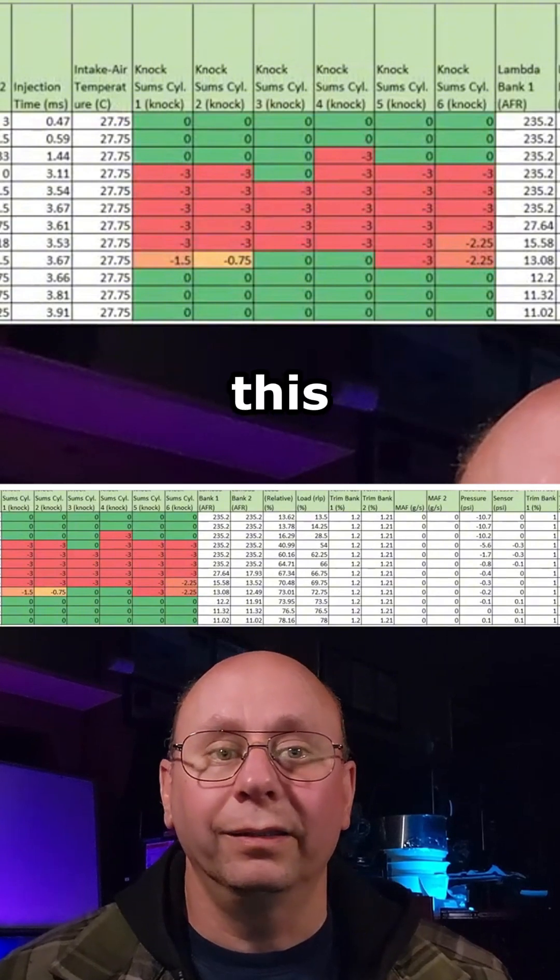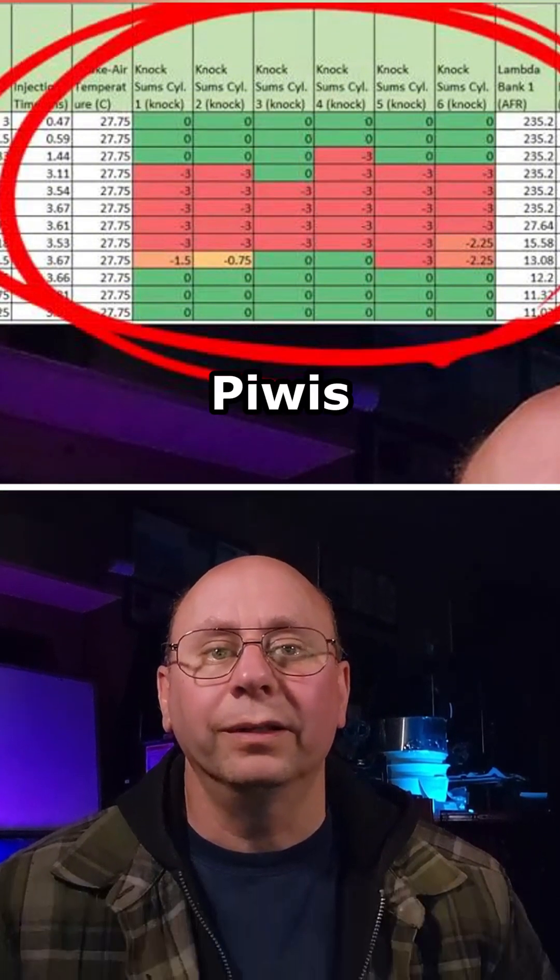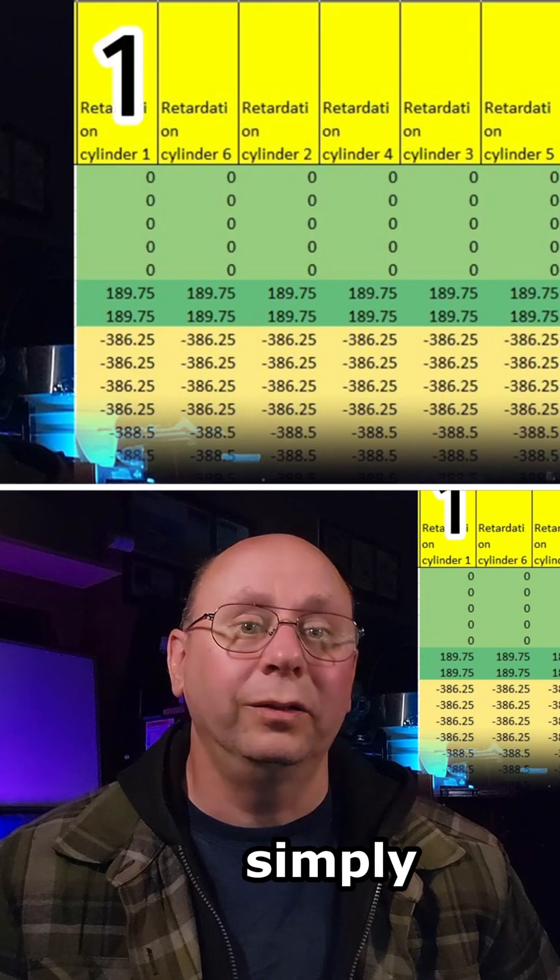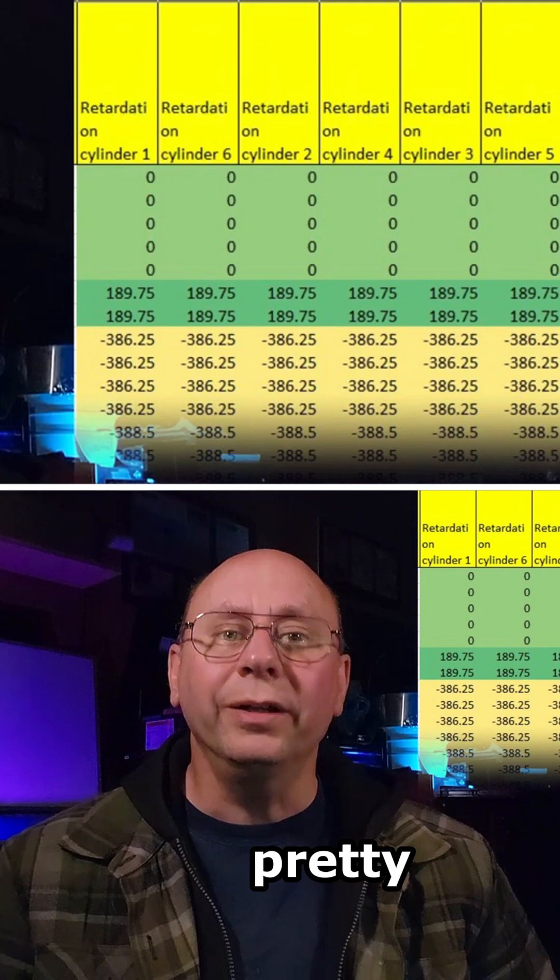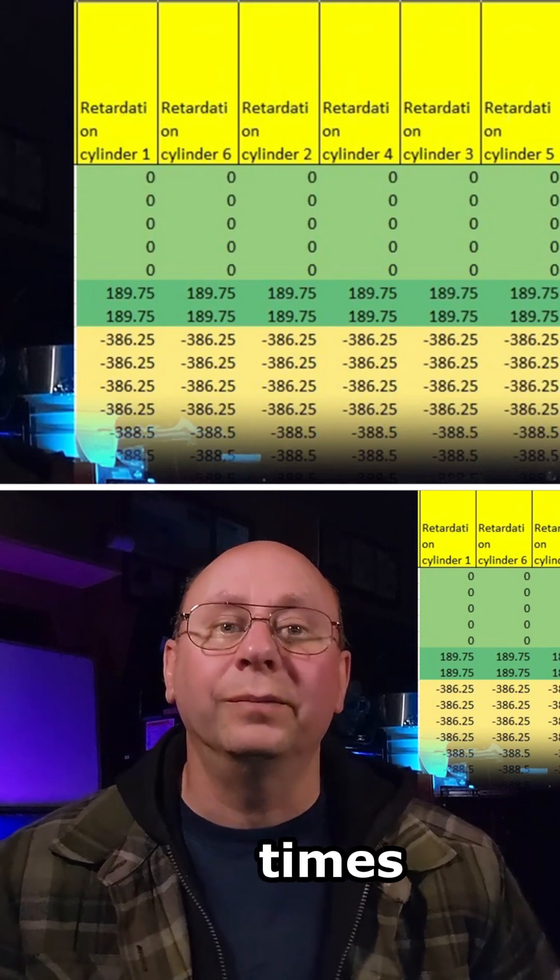The COB access port does this well, as does the factory PWIS. However, the Durametric seems to be simply duplicating Cylinder 1 6 times. Oops. Pretty annoying, and it's been reported so many times, I've lost count.